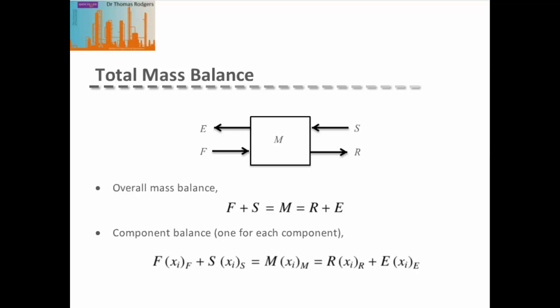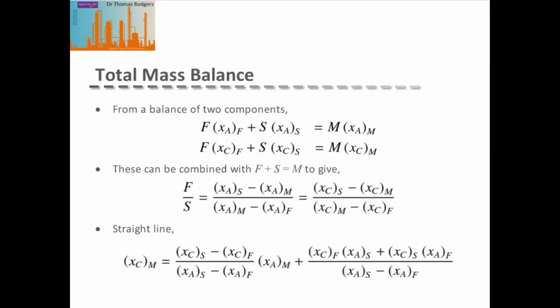For a general component, we would have the amount of that component in the feed plus the amount of that component in the solvent, which gives the total amount of that component at the mixing point. This also equals the amount of that component that comes out in the raffinate plus the amount that comes out in the extract product. If we take two of our components and look at the mass balance between our feed, solvent, and mixed point — in this case, we've taken our solute and our carrier.